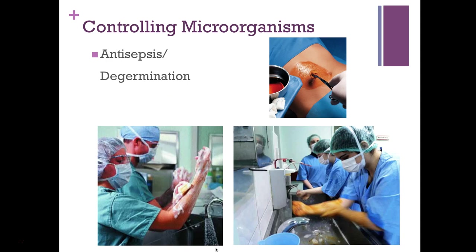Antisepsis, also called degermination, is when you reduce the number of microorganisms on human skin. Surgeons going into surgery undergo this process on their living tissue — they scrub their skin or immerse it in specific chemicals to reduce as many microorganisms as possible. They can also use alcohol and a brush to get under their nails using mechanical friction. Iodine can also be used to reduce the number of microorganisms on the skin during surgery.